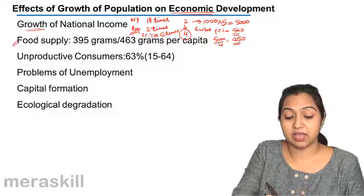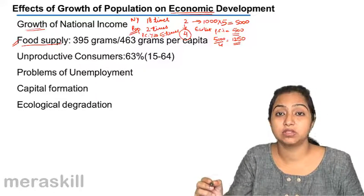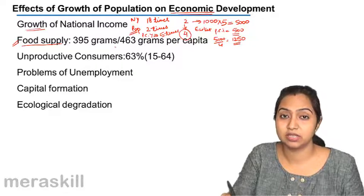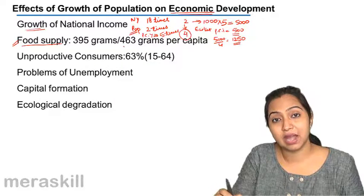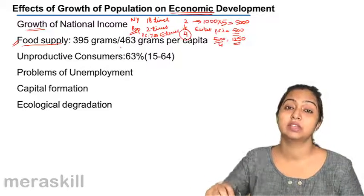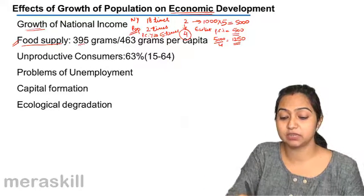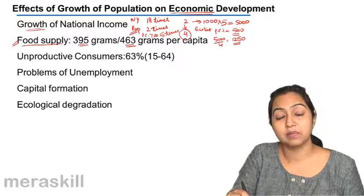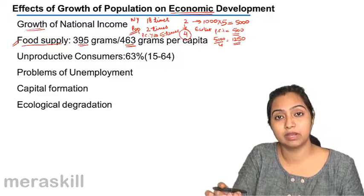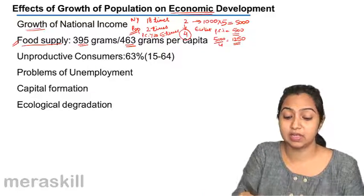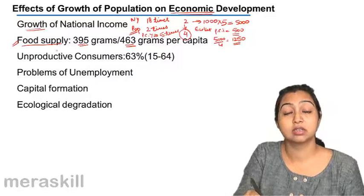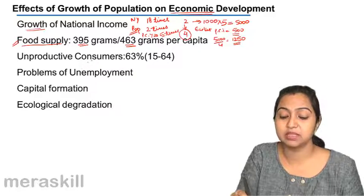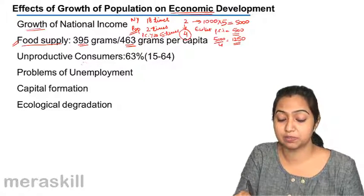Now the next is food supply. The same thing applies here as well. Food supply has also increased tremendously over the years, but when we talk of per capita food availability to the people, it has not increased that much. It has only increased from 395 to 463 grams per capita. Whereas food production has increased many times, because the population has also increased many times, the per capita food supply has not increased that much.